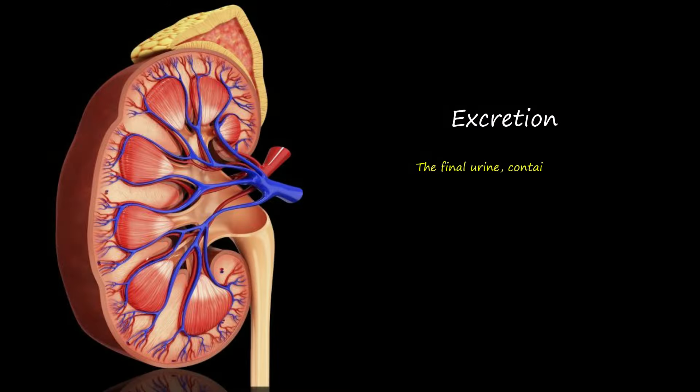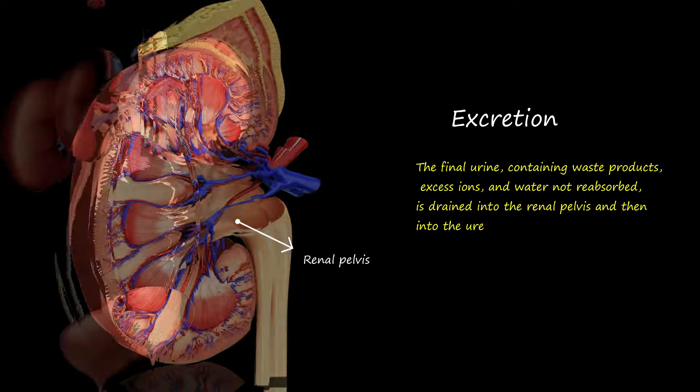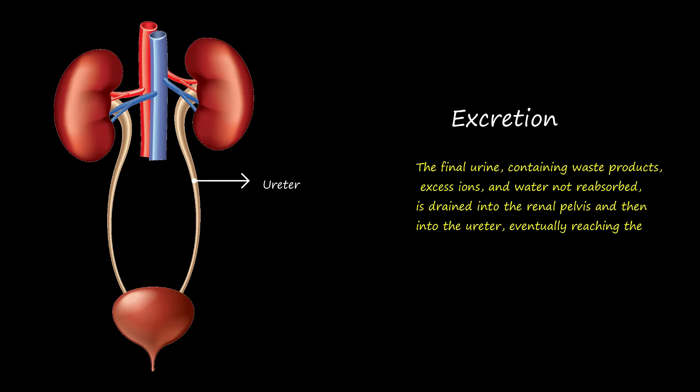The final urine, containing waste products, excess ions, and water not reabsorbed, is drained into the renal pelvis and then into the ureter, eventually reaching the bladder for storage and eventual elimination through urination.